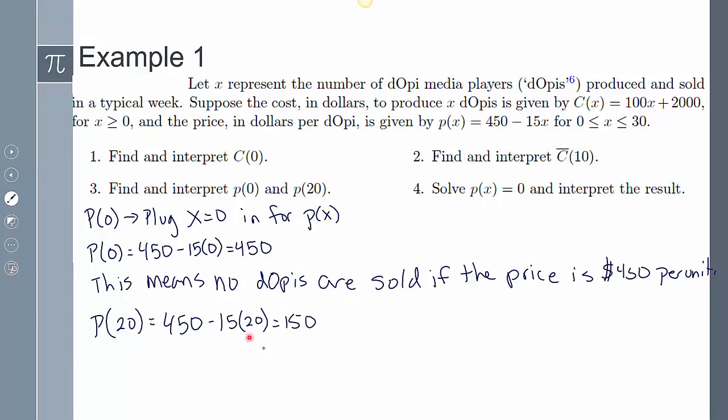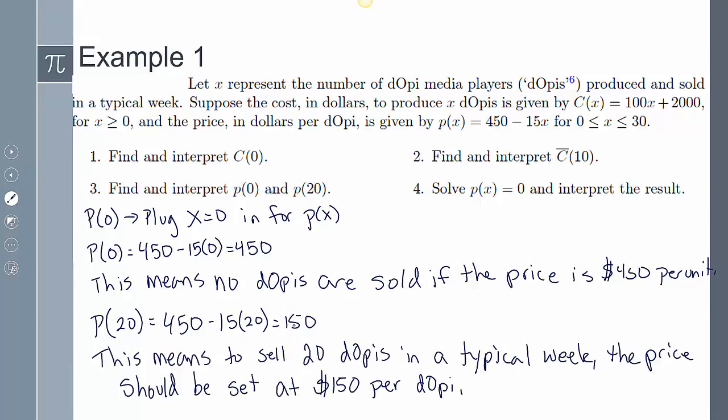So then when it's 20, it's going to be 150. So that means that to sell 20 DOPs, the price should be 150.